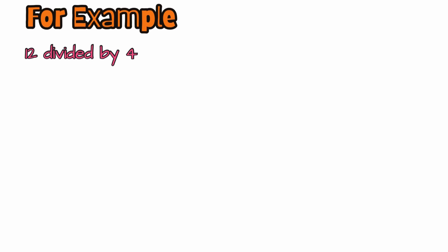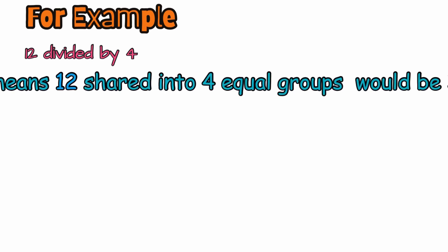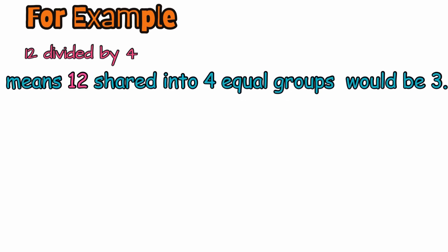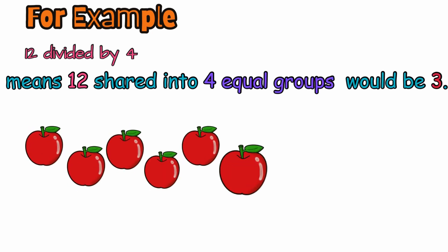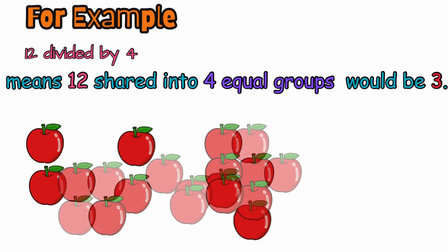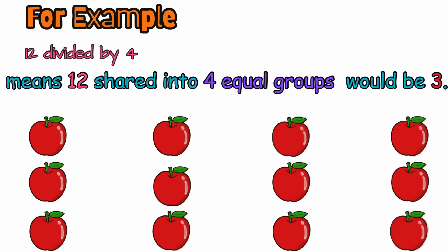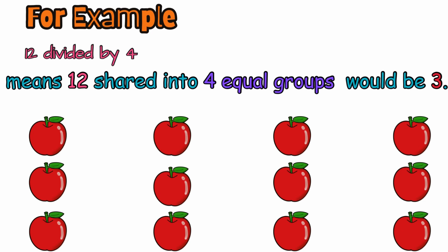First of all, let's remember that division is sharing an amount into equal size groups. For example, 12 divided by 4 means that 12 will be shared into four equal groups, and that will be 3 in each group, like in this case that we're seeing right here. So 12 divided by 4 equals 3.